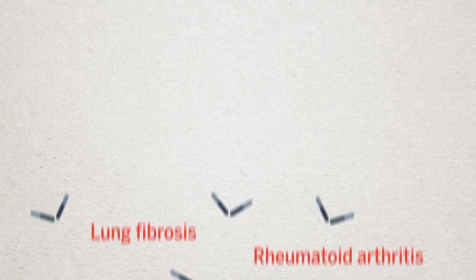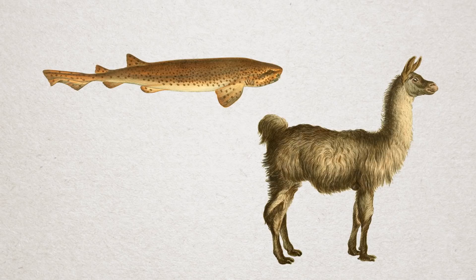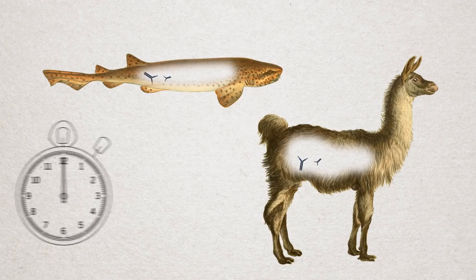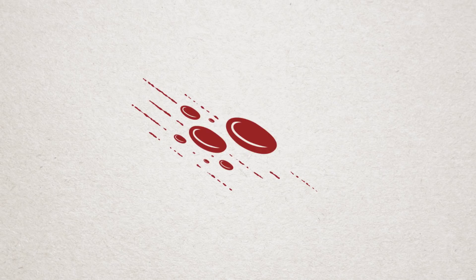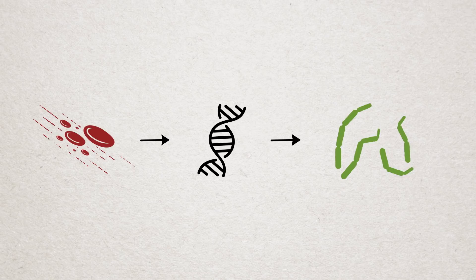One holdup has been the llamas and the sharks. In order to get nanobodies tailored to a specific molecule, the molecule must be first injected into the animals. The animals then make small antibodies over the course of weeks or months. Researchers use blood cells from the animals to obtain genes for the small antibodies, and then use bacteria to produce the nanobodies in the lab.